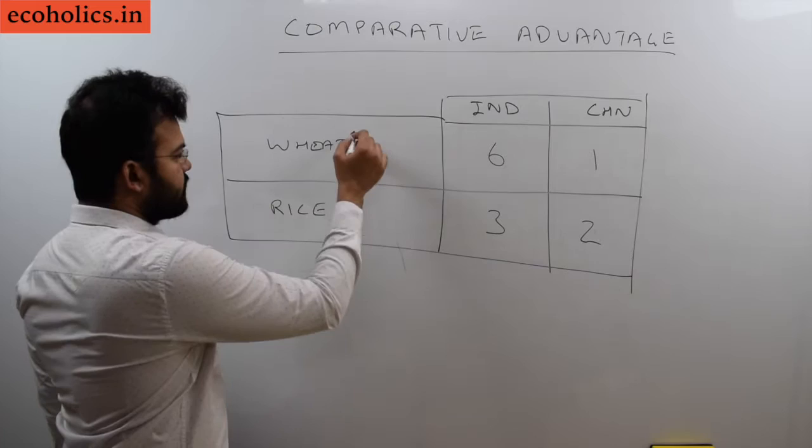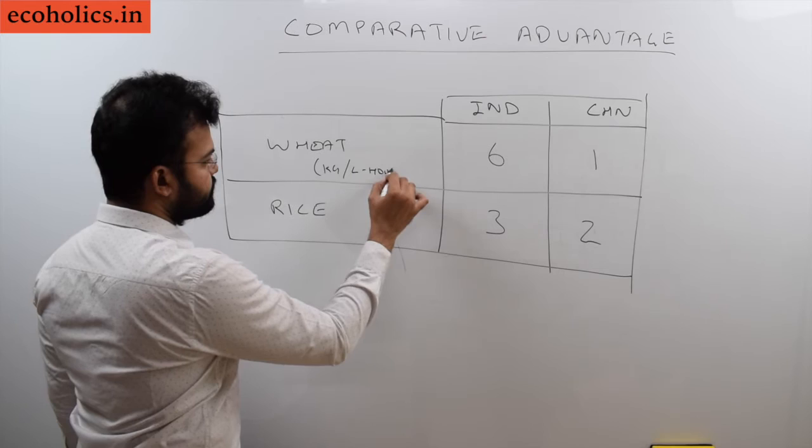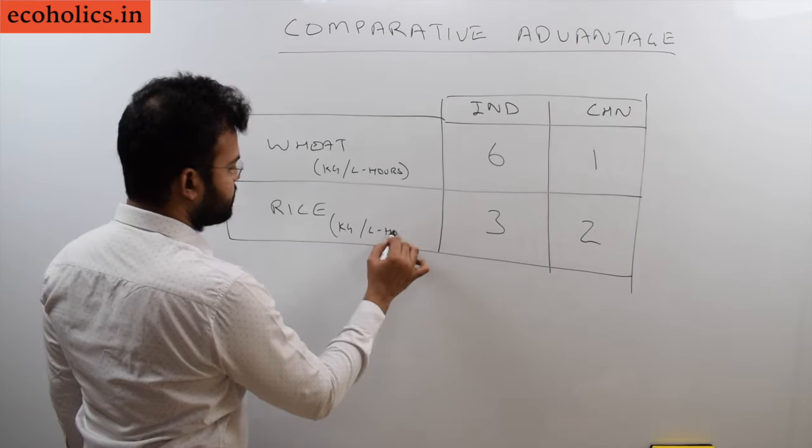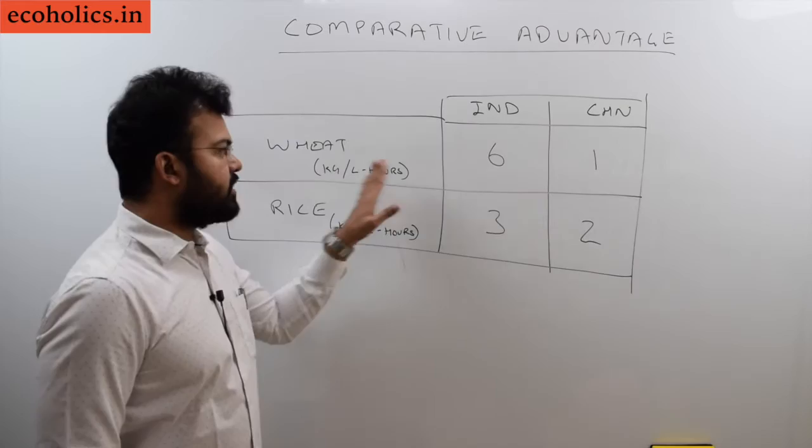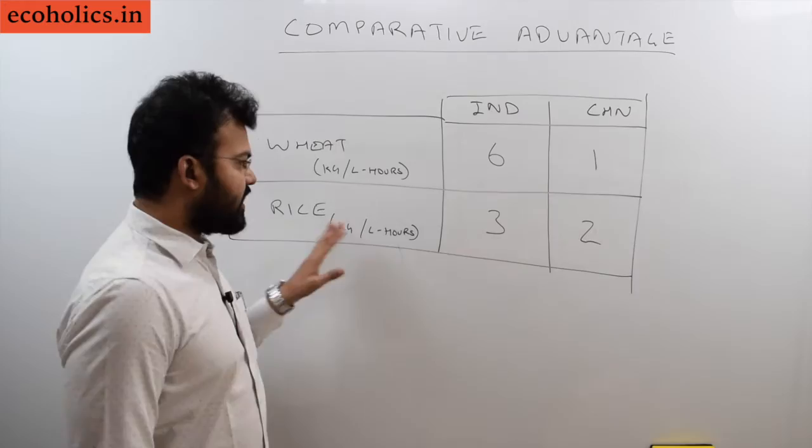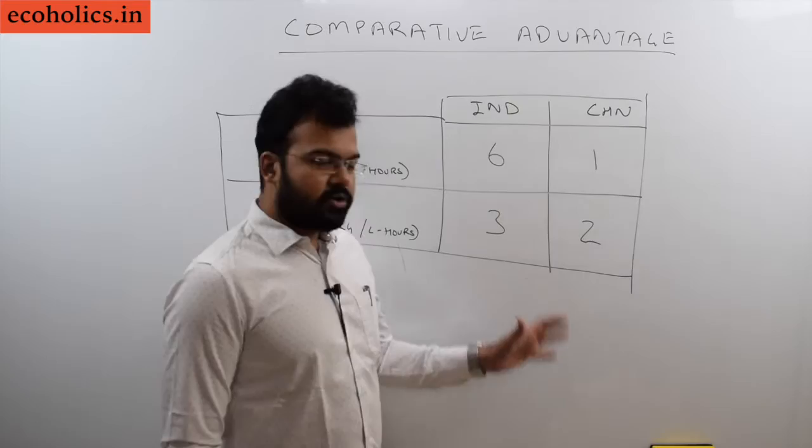This is kg per labor hours. It means in one labor hour, India can produce 6 kg of wheat. In one labor hour, India can produce 6 kg of wheat. On the same lines, China can produce only 1. On the same lines, 3 for rice and 2 for China.